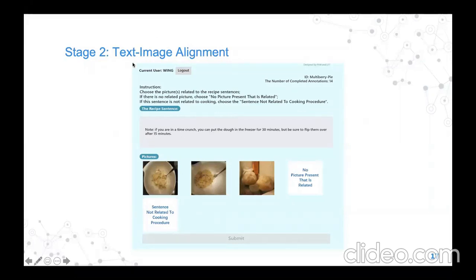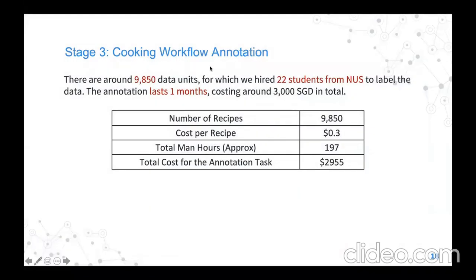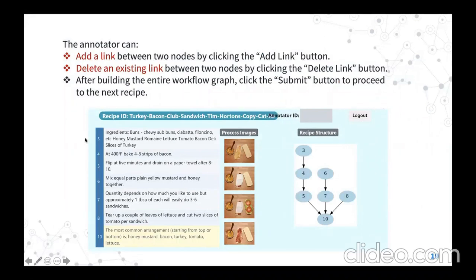After this stage, all cooking images are associated with their corresponding text descriptions. In the next stage, we manually annotate the cooking workflow. We have more than 9,000 cooking recipes and hired 22 students from National University of Singapore to label the data — the whole annotation process lasted more than one month. We also built an annotation platform where the left side shows the current recipe and the right side shows the unfinished cooking workflow. Annotators can manipulate the right side to add or delete links between nodes to build a complete cooking workflow, then click submit to proceed to the next recipe.